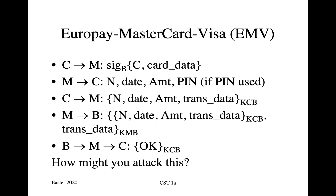The customer goes to the merchant, which might be a merchant terminal or an ATM, and produces a signed string of data: basically the customer's credentials — the primary account number plus card data such as the expiry date and a few other items — all signed by the bank which issued the card. The merchant knows how to identify bank signatures and can validate this. The merchant then sends to the card a random challenge N, a date, an amount, and the PIN that was entered into the terminal, if a PIN was in fact used.